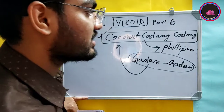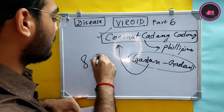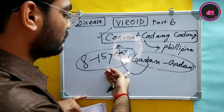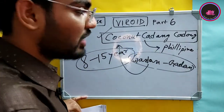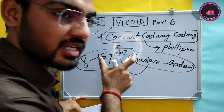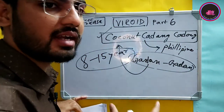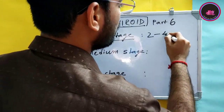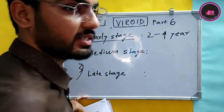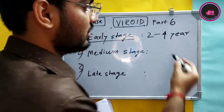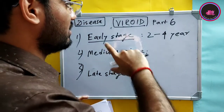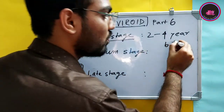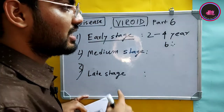Coconut cadang-cadang gets severity in 8 to 15 year old orchards, making it very hard to detect at an early stage. We can divide its progression into early, medium, and late stages. The early stage is seen in 2 to 4 year old trees, where the fronds — the leaves of the coconut — get a bright yellow color and there are some spots, but these are generally ignored.